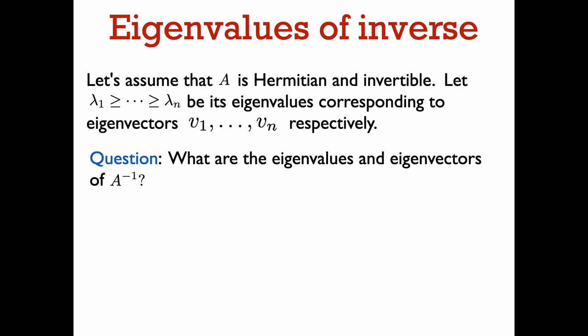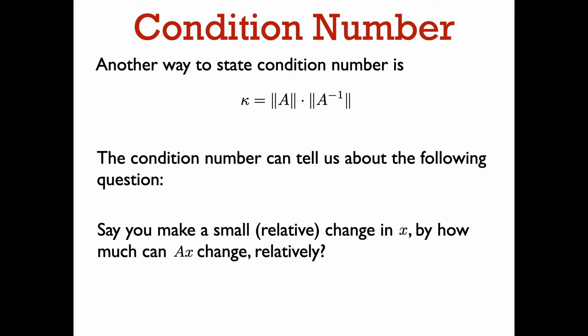Here's a question: if A is Hermitian with eigenvalues lambda_1 through lambda_n, what are the eigenvalues and eigenvectors of A inverse? The inverse of A has the same eigenvectors as A, and the eigenvalues of A inverse are the reciprocals of the eigenvalues of A. So v_i is an eigenvector of A inverse with eigenvalue 1 over lambda_i. Because of this reciprocal relationship, the largest absolute eigenvalue of A inverse is 1 divided by the smallest absolute eigenvalue of A. This means the condition number equals the spectral norm of A times the spectral norm of A inverse.